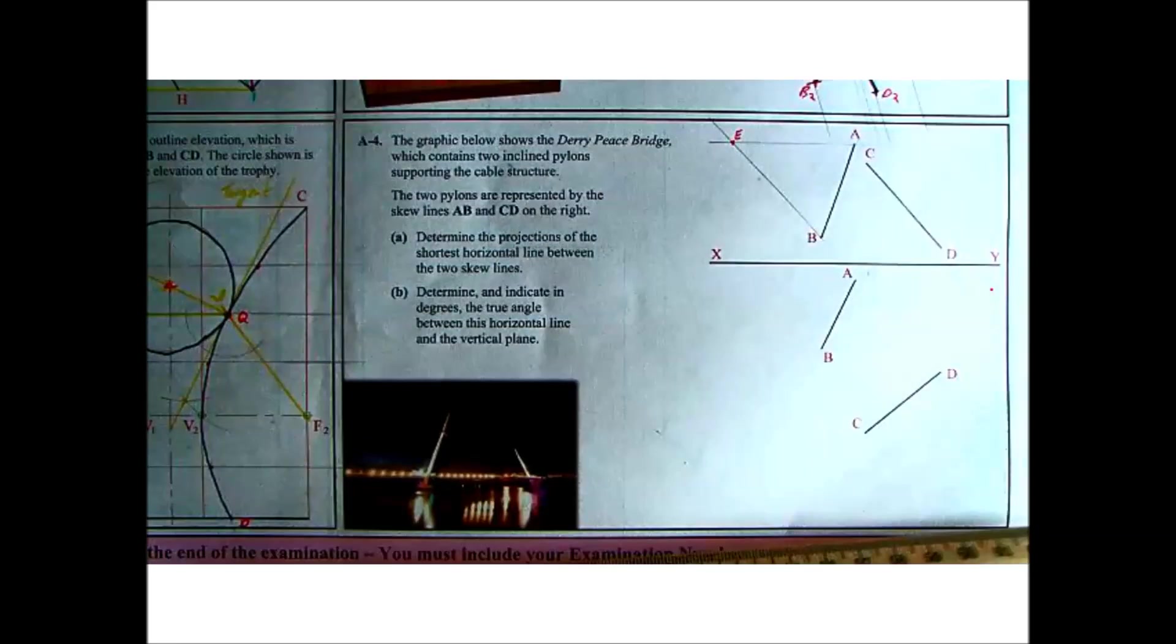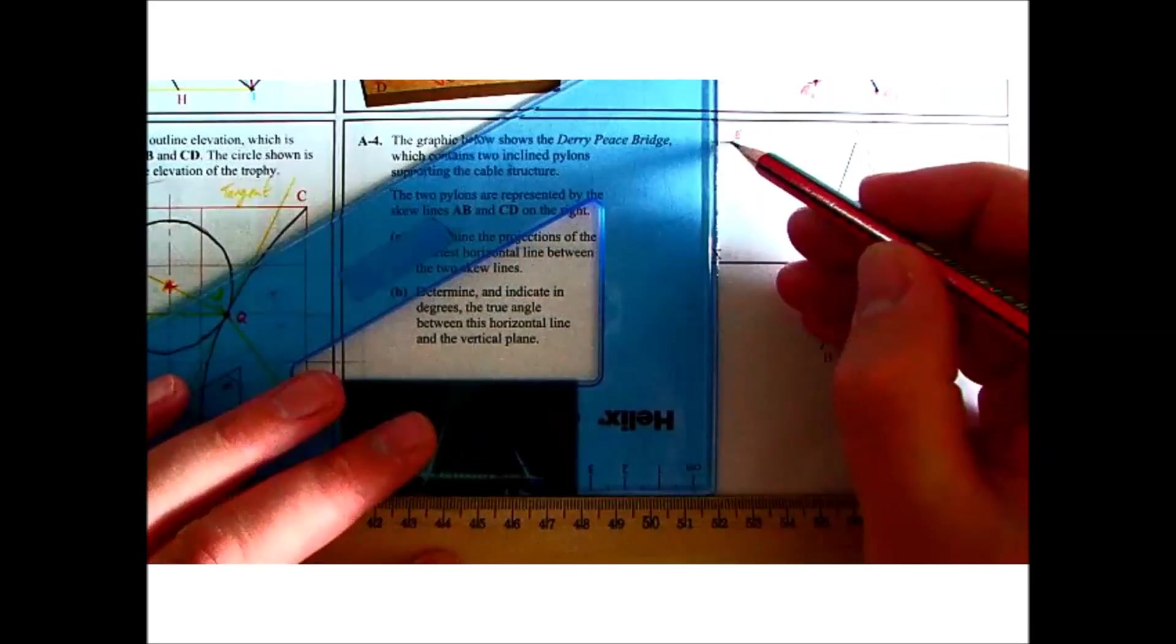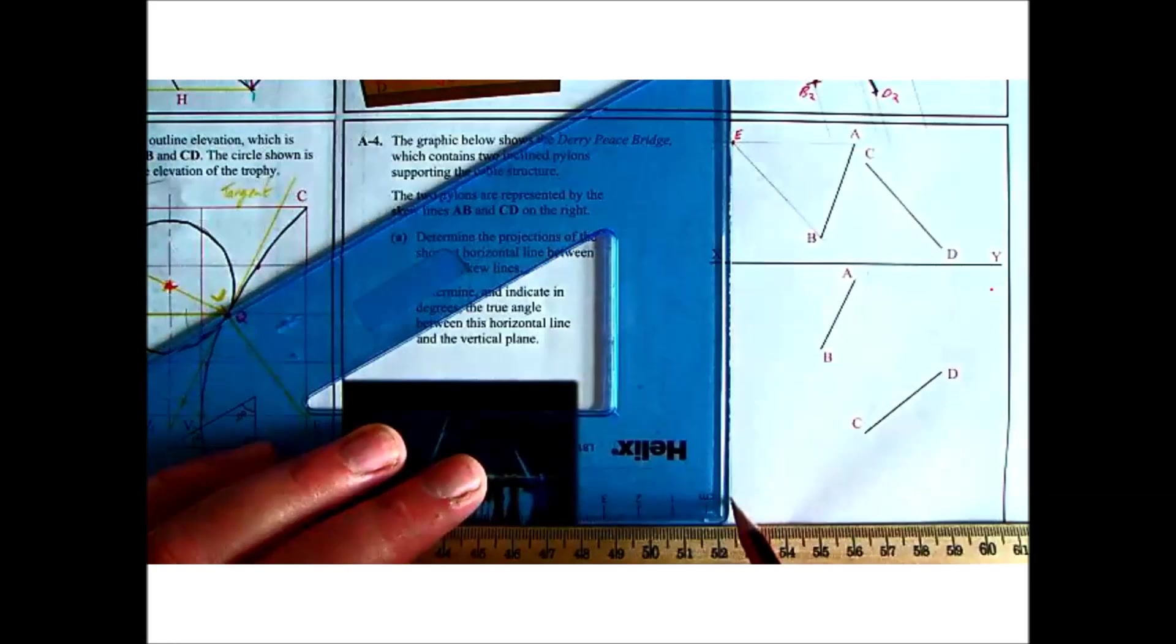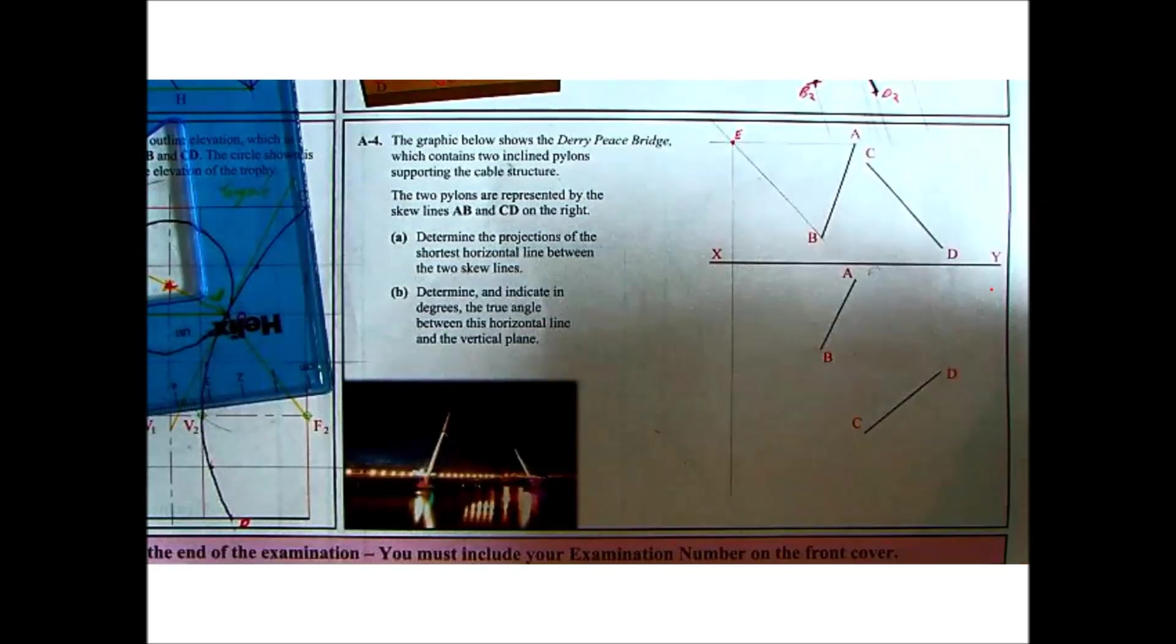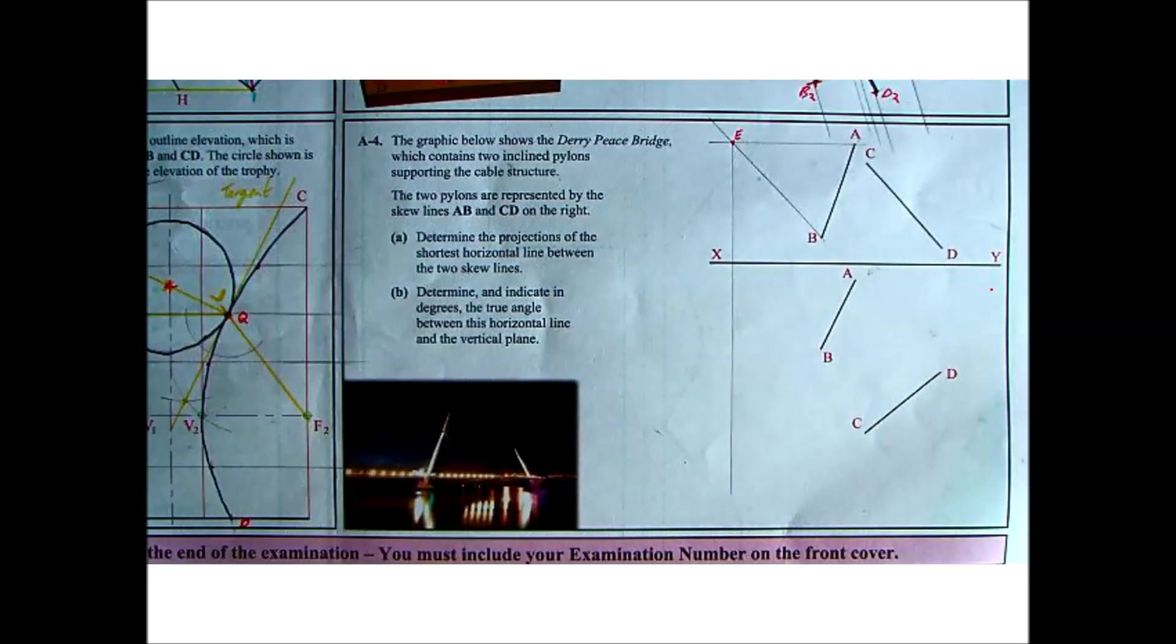By bringing E straight down and repeating the same process, so bringing CD over to B, we'll find a true length of that line in plan.